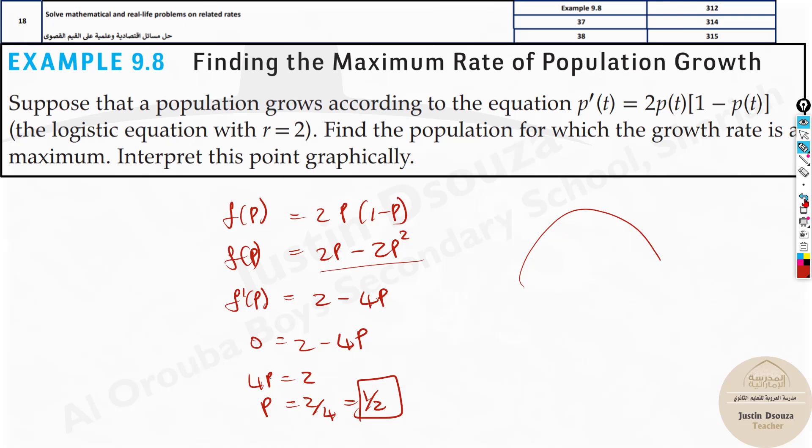But another way is you can do the number line method and take test value. This is half, take test value of 0 and say 1 and check it out. If it's increasing, decreasing, then you have a maximum value. The another method, the easier method is double derivative.